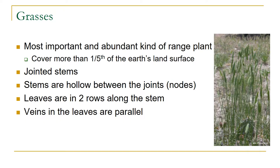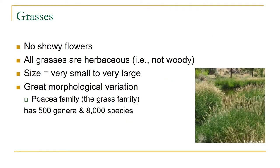If you look at the leaves, especially from above, you'll see two rows of leaves — one on one side and then one on the other, alternating up the stem. If you laid the leaf flat, you'd see that the veins are parallel to the margin of the leaf — that's one of the key characteristics of grasses. Grasses do not have showy flowers because they're wind pollinated; the pollen gets from one plant to another just by the wind, so they don't need to attract pollinators like insects.